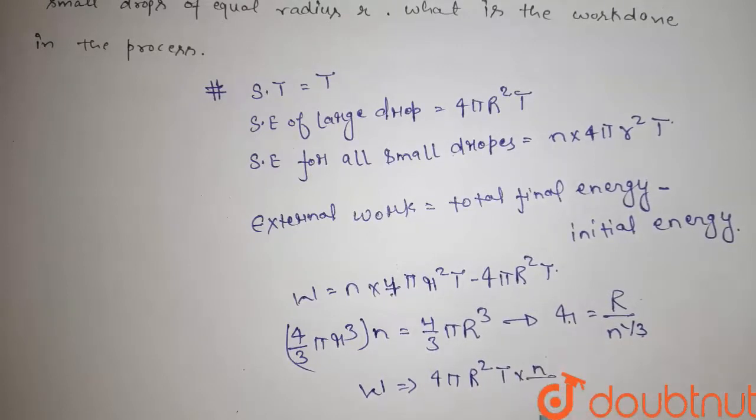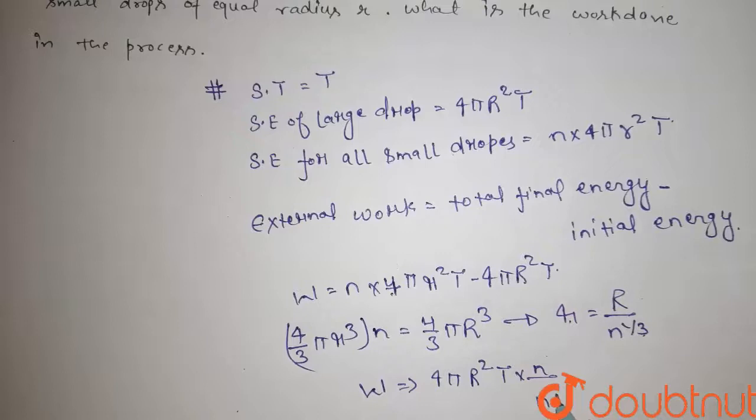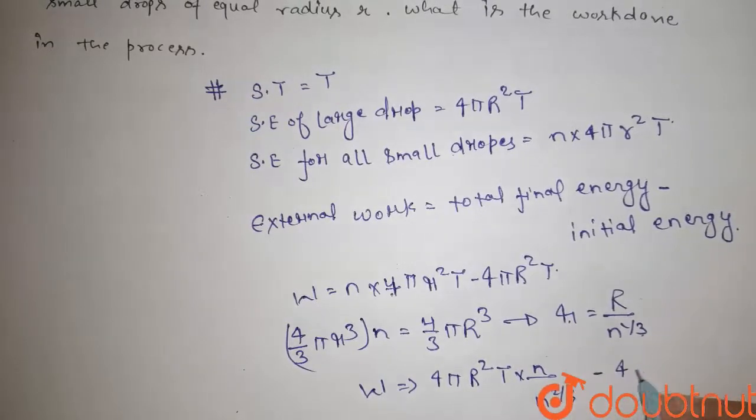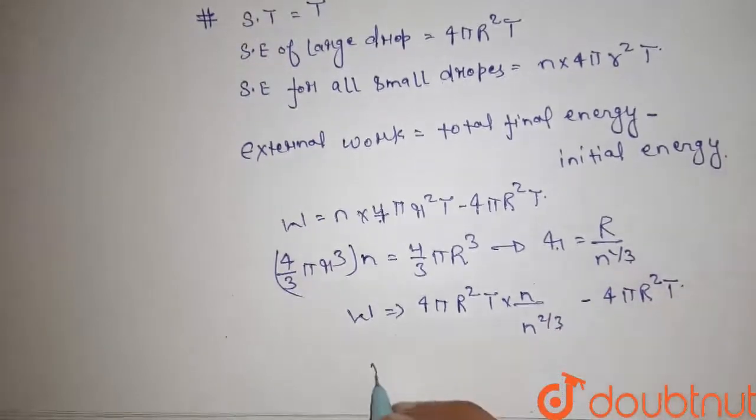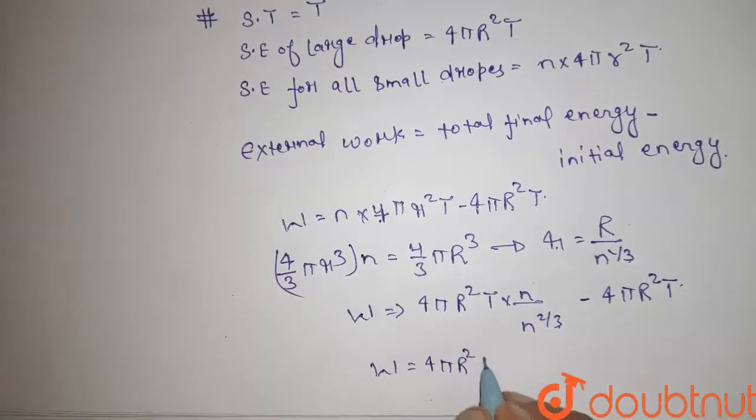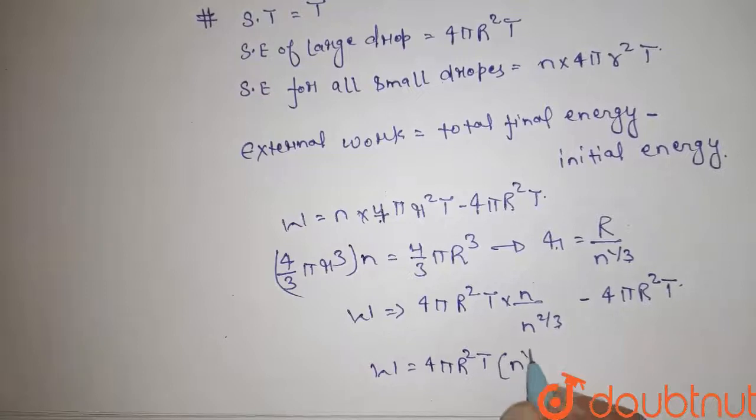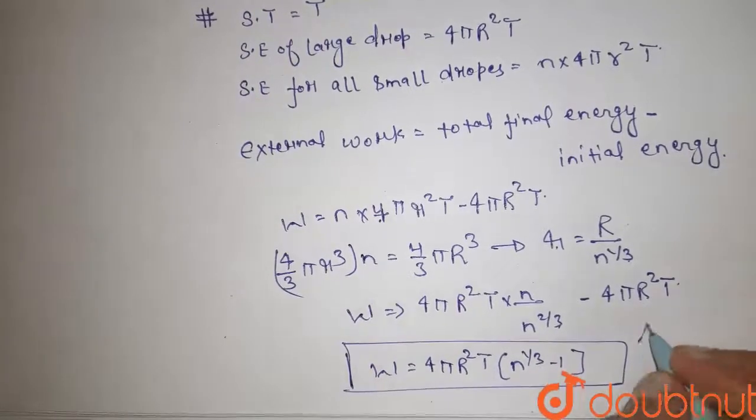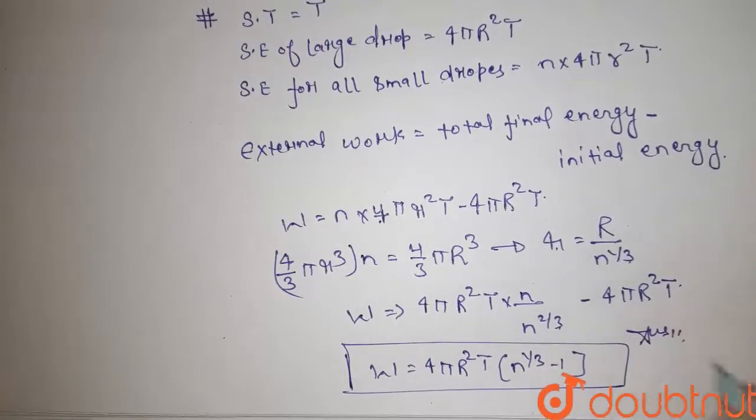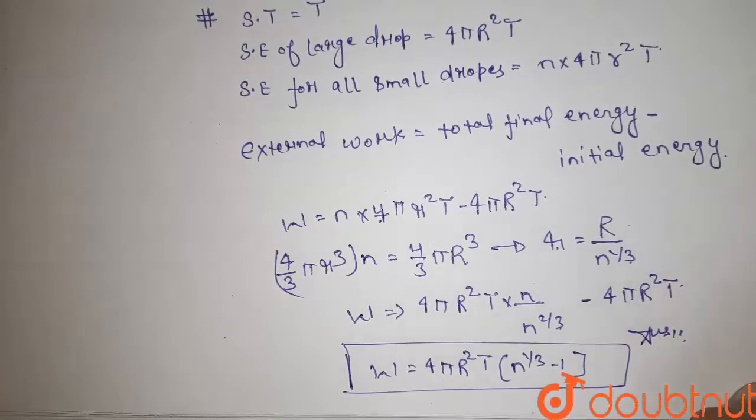Substituting this relationship into the work equation, after solving we get W equals 4πR²T times (n raised to power 1/3 minus 1). This is the final answer for work done in this process.